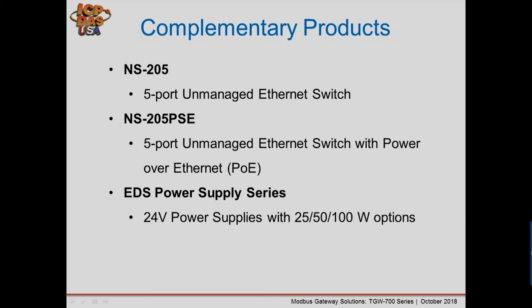Complementary products include the NS205, a five-port unmanaged Ethernet switch for environments without existing Ethernet infrastructure. The NS205 PSE version supports PoE — supply 48 volts DC and it passes power to TGW modules. EDS power supplies are also available, providing 24 volts DC in 25, 50, and 100 watt options.